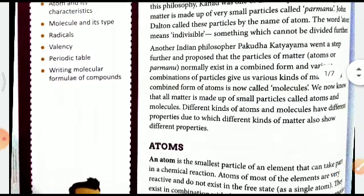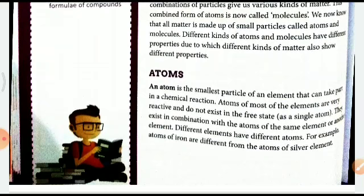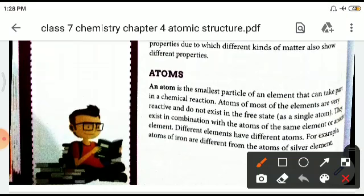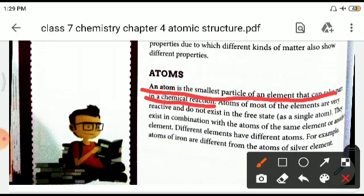Different kinds of atoms and molecules have different properties, due to which different kinds of matter also show different properties. If the constituent atoms and molecules have different properties, then the matter will also show different properties. An atom is the smallest particle of an element that can take part in a chemical reaction — please underline this definition. Atoms of most elements are very reactive and do not exist in free state as a single atom; they exist in combination with atoms of the same element or another element.